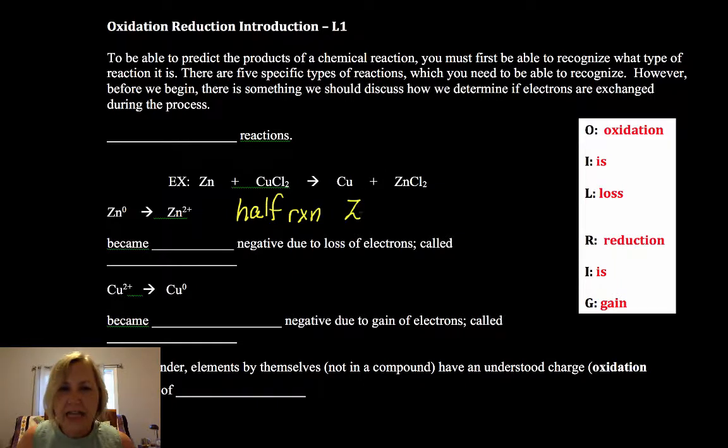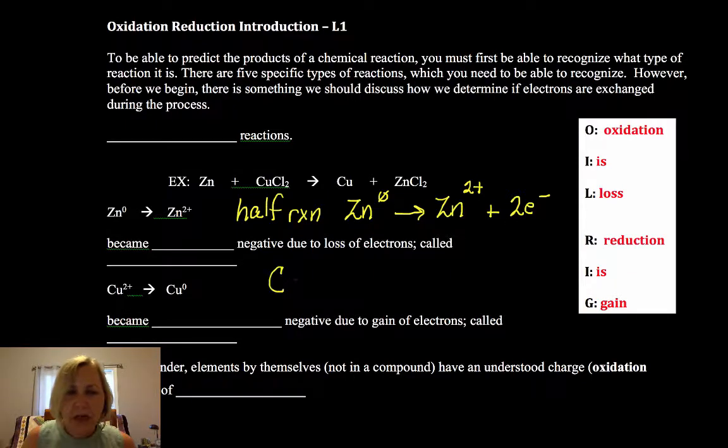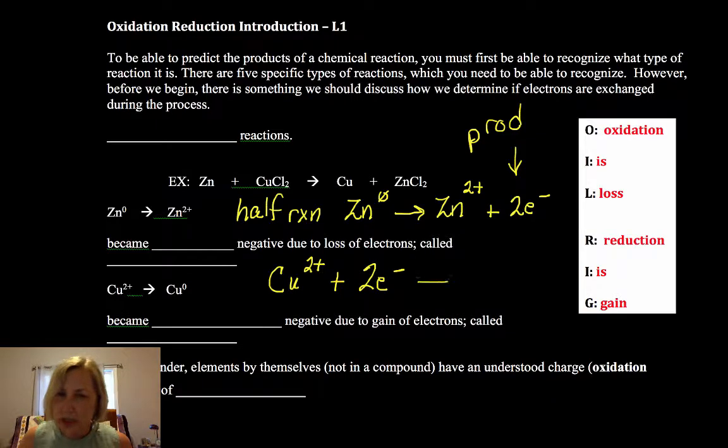So the full half reaction for this zinc would have been zinc at zero, which would be implied, goes to zinc two plus plus two electrons. You notice the charge on both sides is the same. Zero on the left-hand side, plus two minus two is also zero. The copper gained electrons. So you notice that when it's a loss, the electrons are a product in a half reaction, and when it's a gain, the electrons are a reactant. And we still have charge balance on both sides.